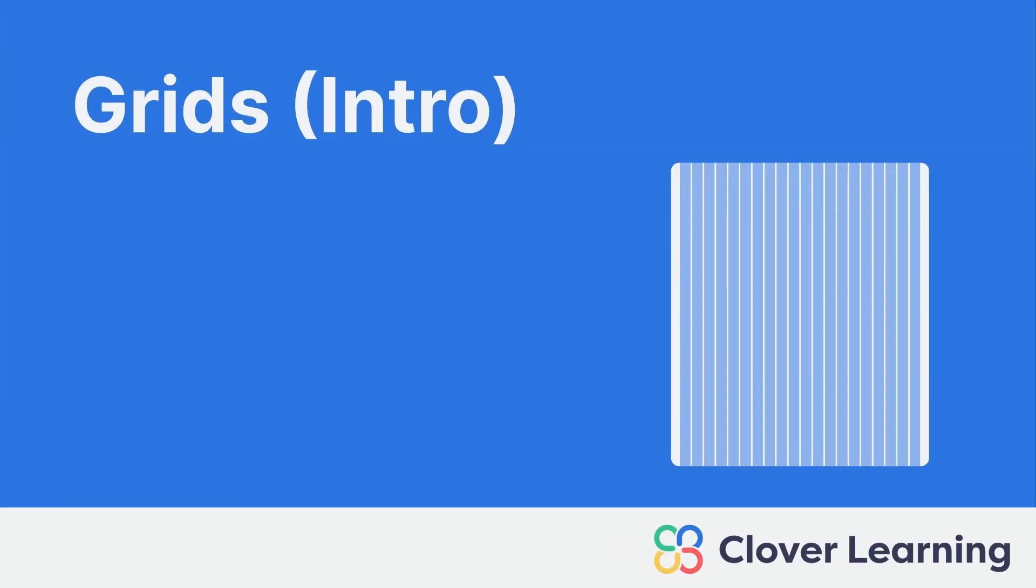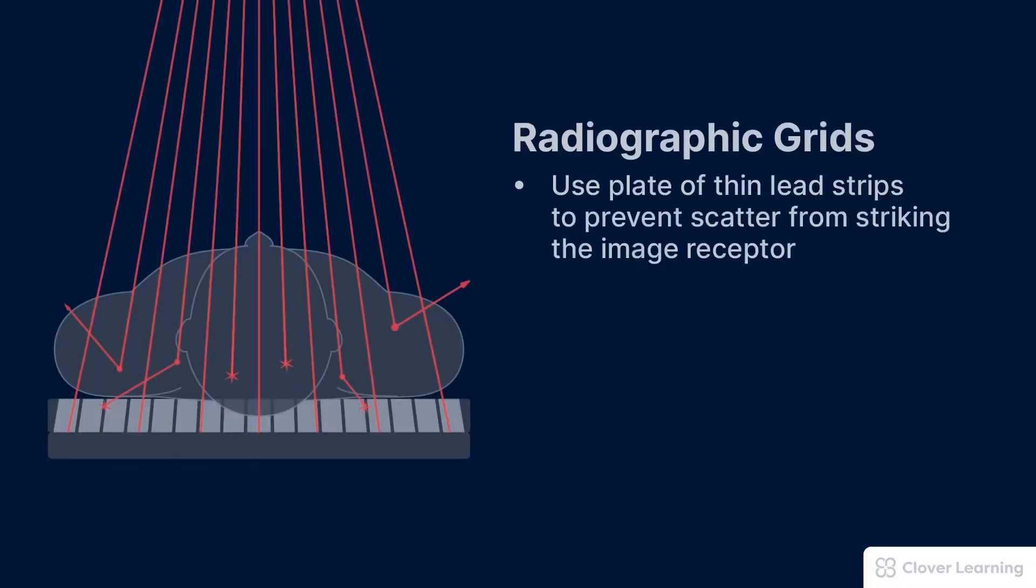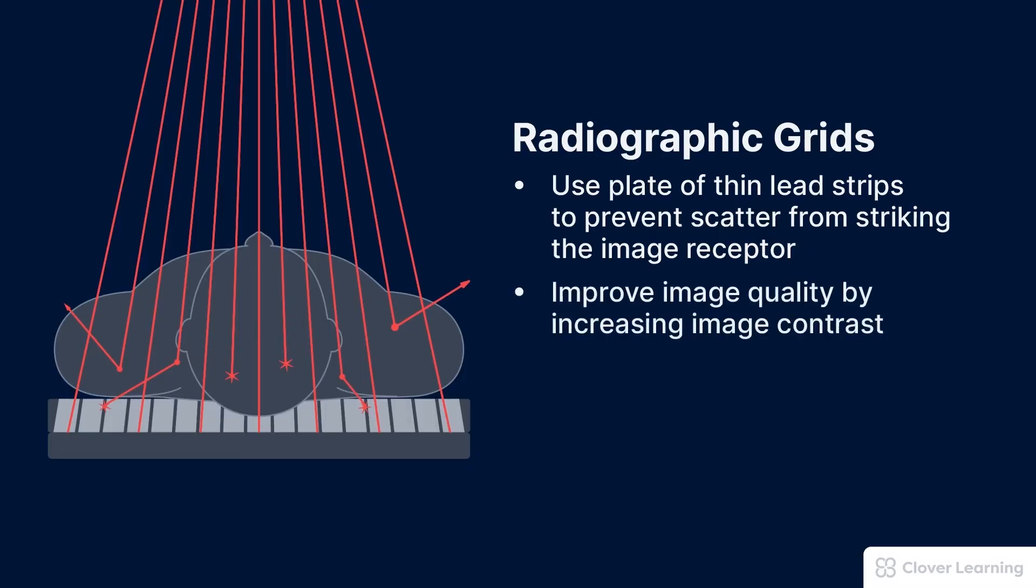Hey everybody, welcome back. In this video we're discussing radiographic grids. Radiographic grids have a very specific design and purpose. A grid uses a plate of thin lead strips to prevent scatter from striking the image receptor and that improves image quality by increasing image contrast.